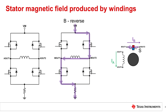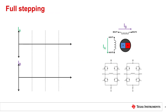By energizing the A and B phases at different times, the driver can move the rotor in discrete steps as the rotor magnetic field continuously tries to align with the stator magnetic field. Full stepping is one of the simplest ways to drive a stepper motor. For the first step, a stepper driver sends current through the A and B phase windings, creating a north pole on each winding.